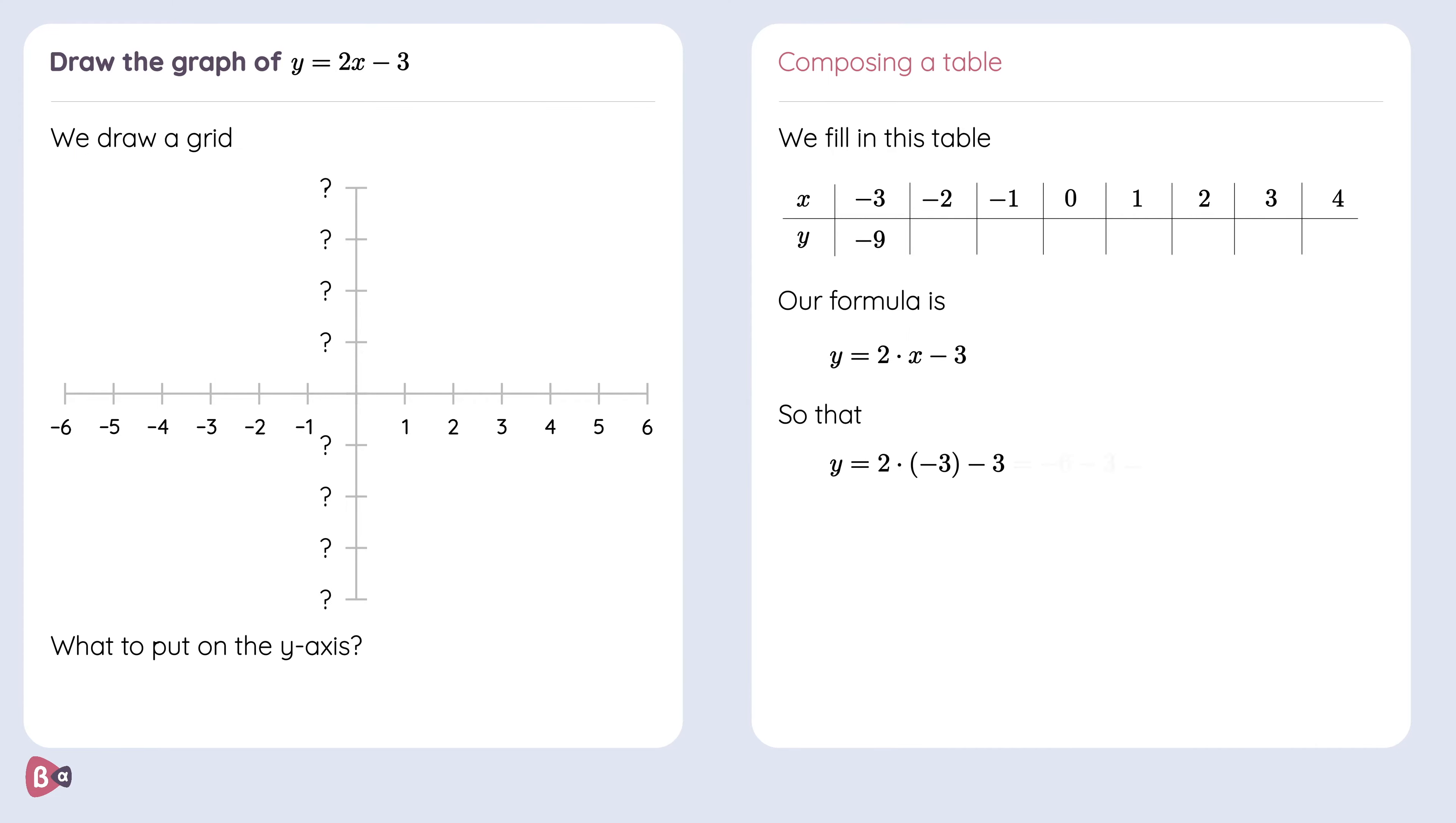The second value of x is x is equal to minus 2. Now 2 times minus 2 is minus 4. Don't forget to subtract 3 and the final value will be minus 7.